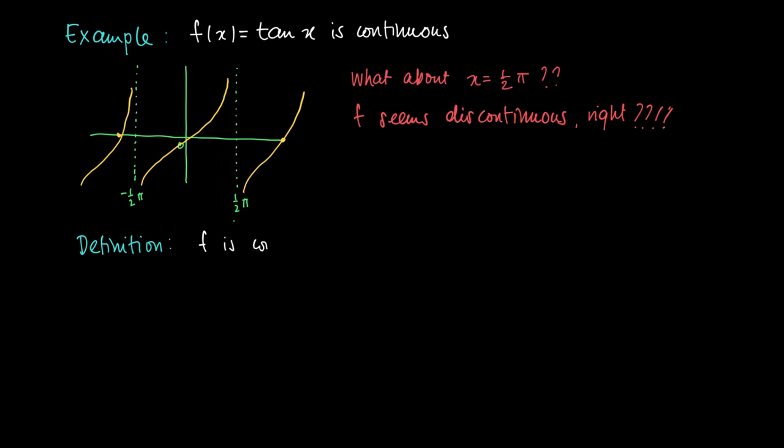Look again at the definition. If f is continuous at some value a, then we should have that the limit as x approaches a of f(x) should equal f(a). Implicitly in this definition, there is the statement that a should belong to the domain of f. But this is not true for a equal to π/2. Half pi is not contained in the domain of f.